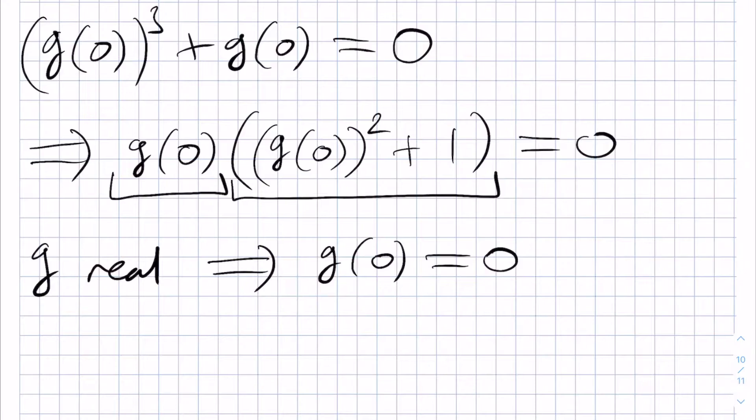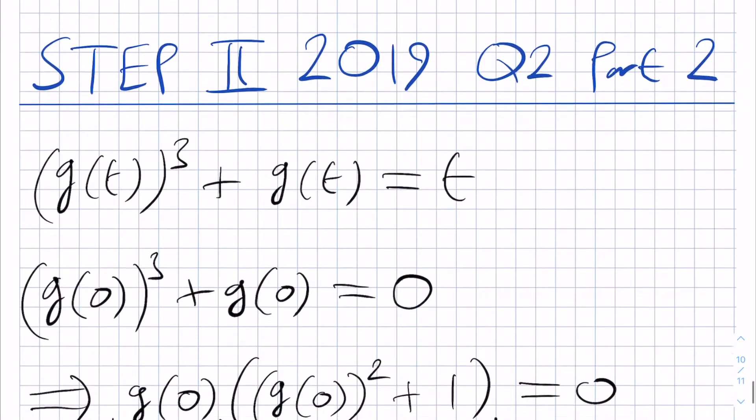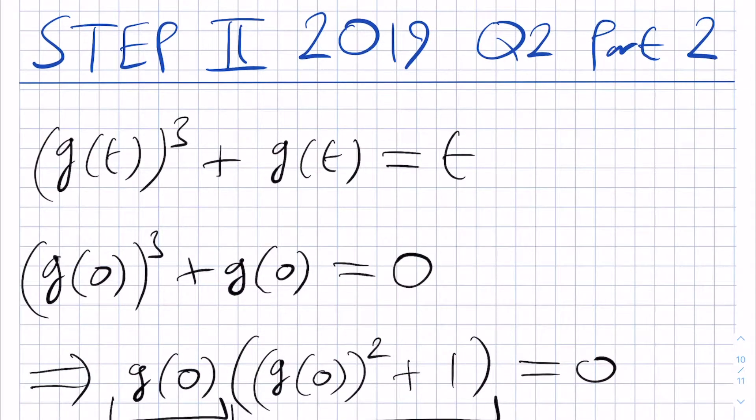Next, we want to show that g prime of t is positive for all t. So, it would be helpful if we were to differentiate this relation here. If we apply d by dt to both sides and use the chain rule for the first term,